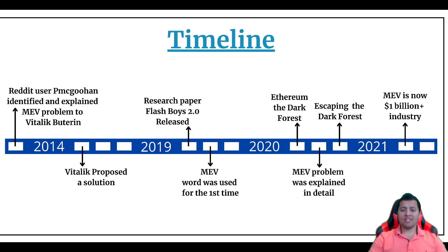However, both of these are the same thing. They're sometimes called Validator Extractable Value on ETH 2.0. MEV is a measure representing the total value that can be extracted permissionlessly from the reordering, inclusion, or censoring of transactions.